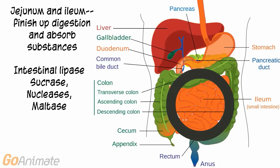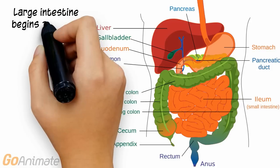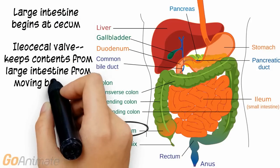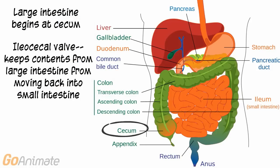Chyme then moves to the jejunum and ileum, parts of the small intestine, where most of digestion and absorption is finished. Some intestinal enzymes include intestinal lipase, sucrase, nucleases, and maltase.